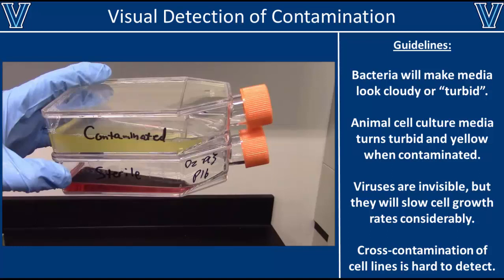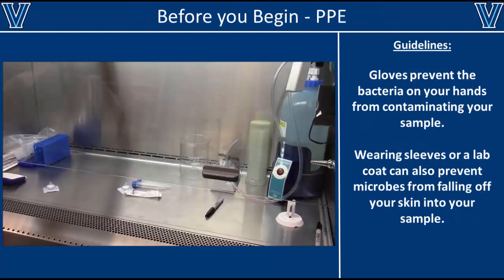While bacterial and fungal contamination are relatively easy to identify by eye, remember that viruses and cross-contaminated cell lines are invisible to the naked eye. In most cases, these contaminants can only be detected with genetic testing.